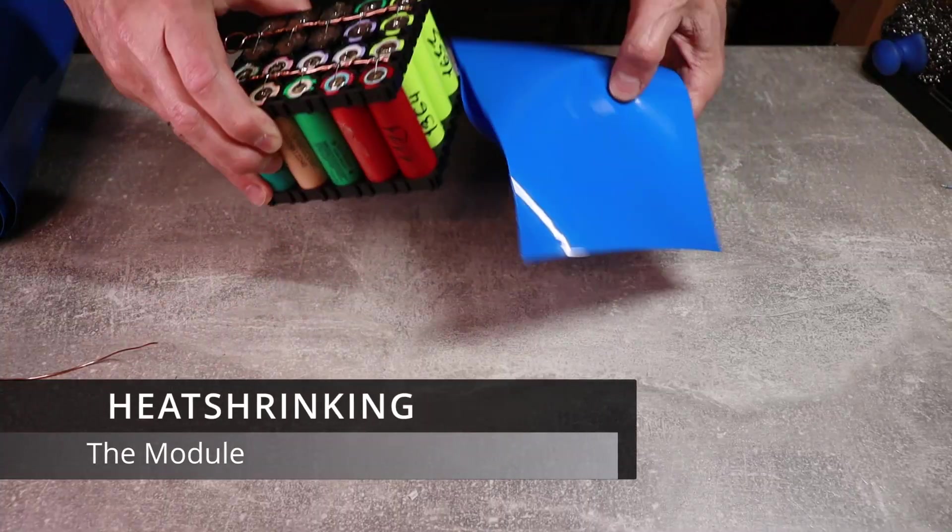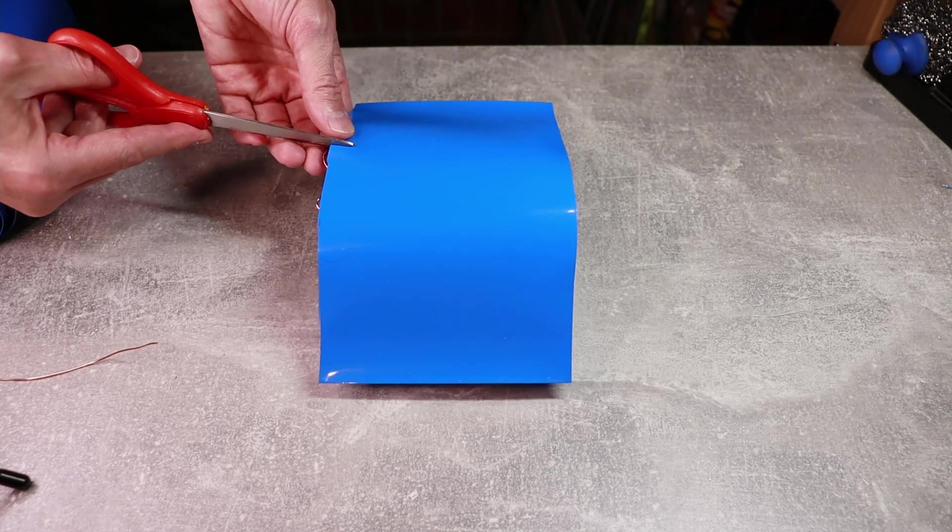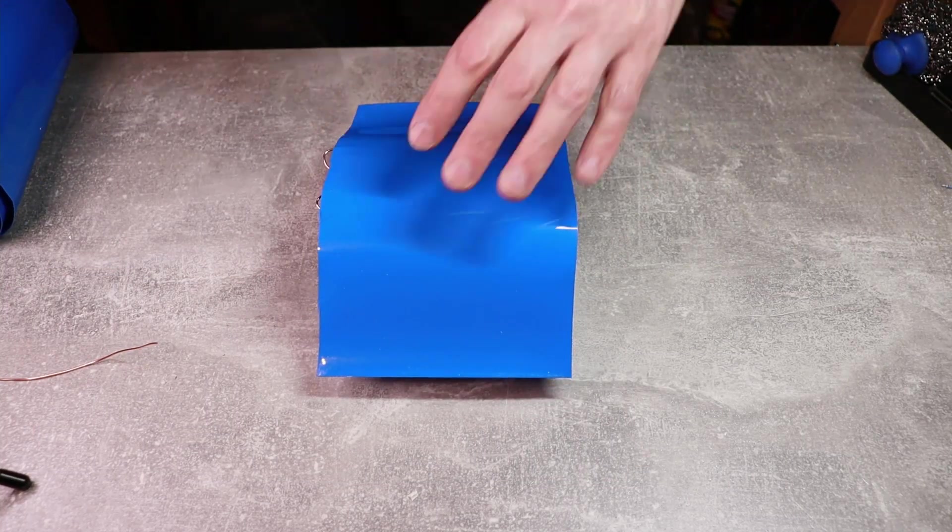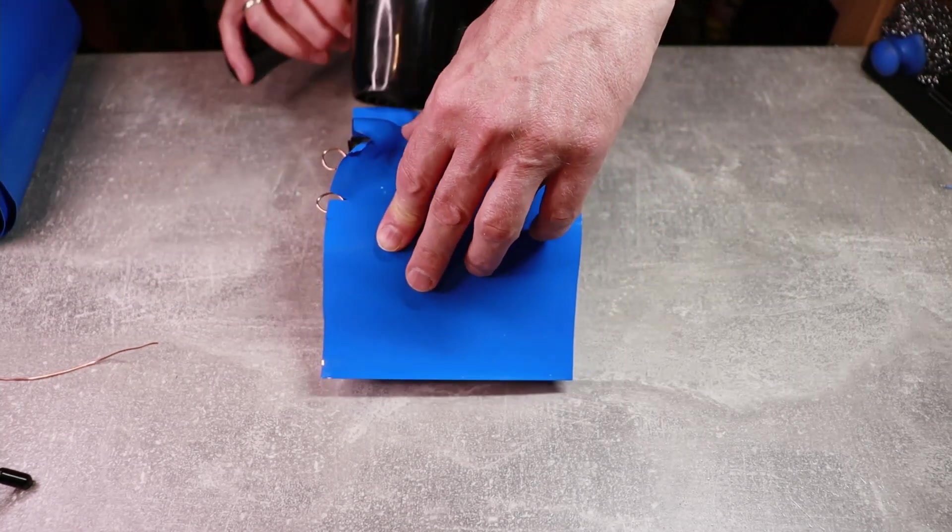And the last thing I needed to do is to wrap up my creation in a heat shrink. So this will protect and cover all the contacts on the top. And it will make it look nice and neat.